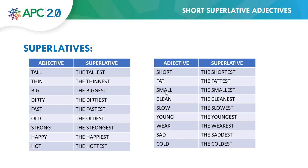Tall → the tallest. Thin → the thinnest. Big → the biggest. Dirty → the dirtiest. Fast → the fastest. Old → the oldest. Strong → the strongest. Happy → the happiest. Hot → the hottest. Short → the shortest. Fat → the fattest. Small → the smallest. Clean → the cleanest. Slow → the slowest. Young → the youngest. Weak → the weakest. Sad → the saddest. Cold → the coldest. Don't forget that we follow the rules, and when using the superlative form we have to add 'the' at the beginning of the adjective.